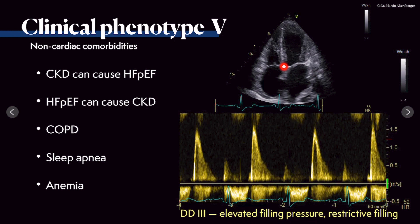We have a diseased left ventricle, a diseased left heart, and we have this restrictive filling pattern — a very high and steep E wave and a very small A wave.